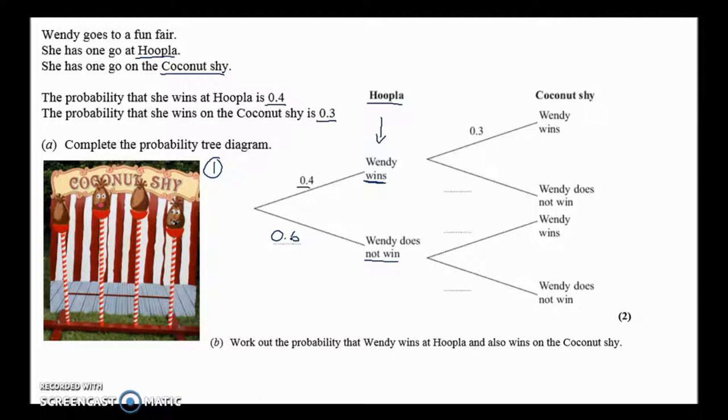Moving on, we're looking at the coconut shy now, so this is like event 2. We're playing the coconut shy after we've played the hoopla. It says that the probability that she wins on the coconut shy is 0.3, that was given to us. What's the probability that she doesn't win? Well, 0.3 is the chance of winning, 0.7 makes 1, so that's the chance of not winning.